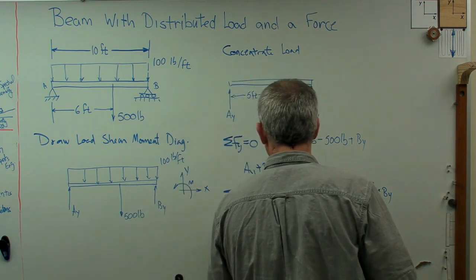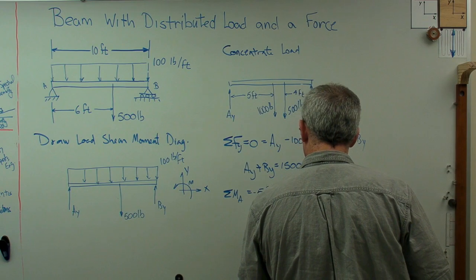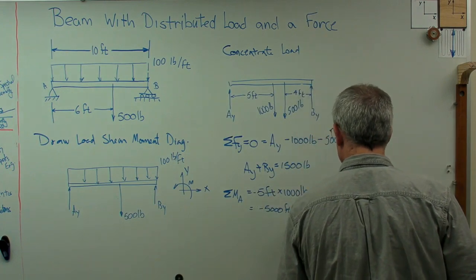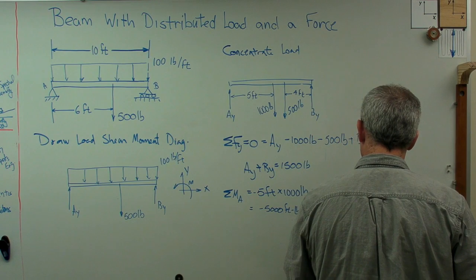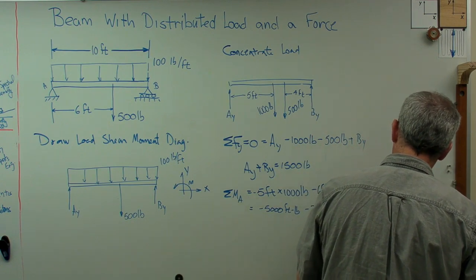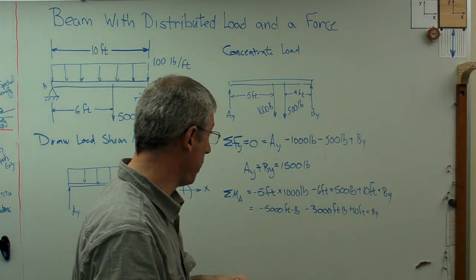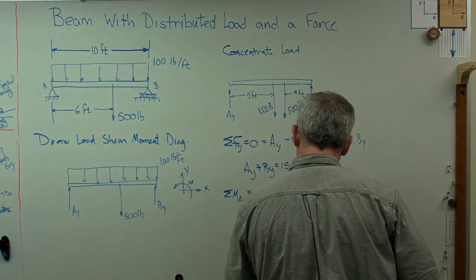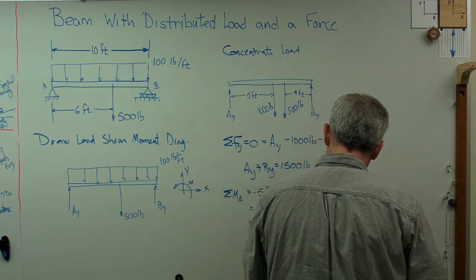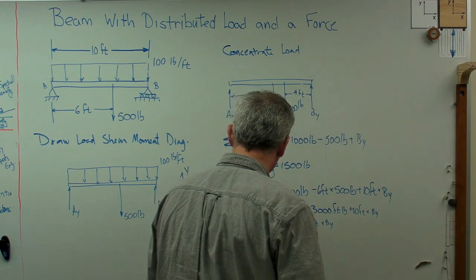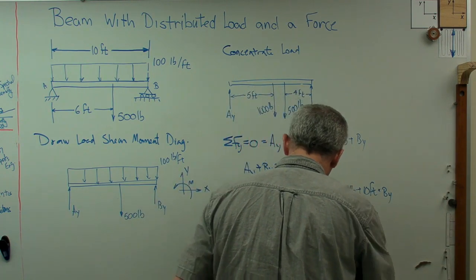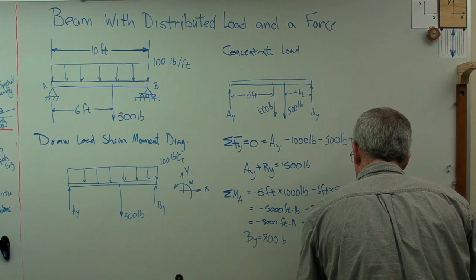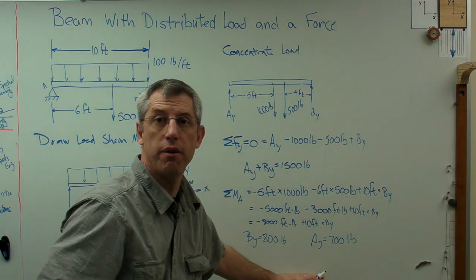Let's add this up here. So minus 5,000 foot pounds minus 3,000 foot pounds plus 10 feet times B_Y. And if we go through the next step here, we're going to find out that B_Y equals 800 pounds. That's minus 8,000 foot pounds plus 10 feet times B_Y equals zero, so we're going to find out that B_Y is 800 pounds. And because of that, A_Y is going to equal 700 pounds.